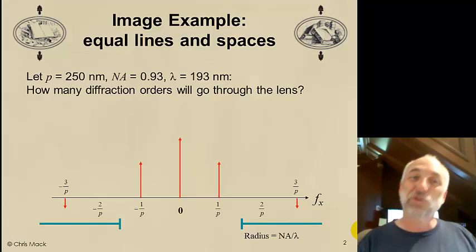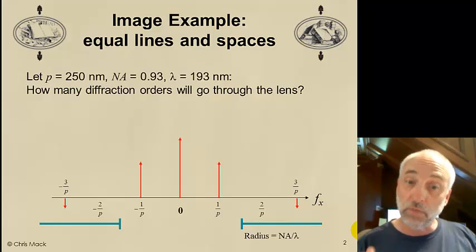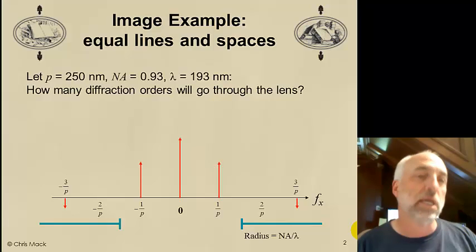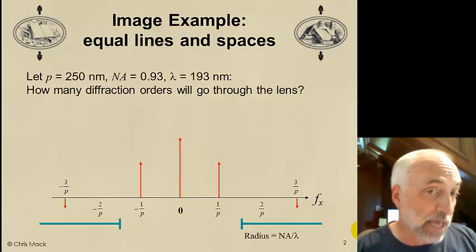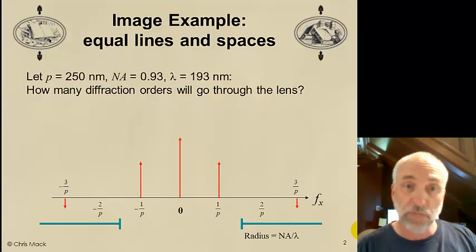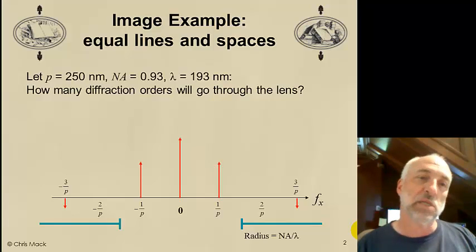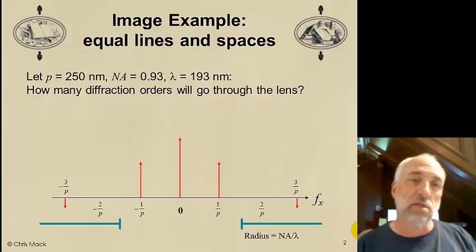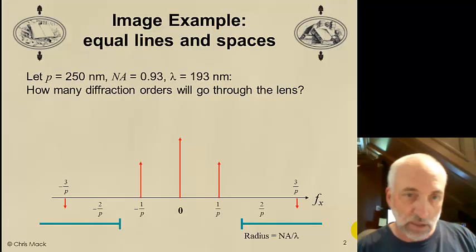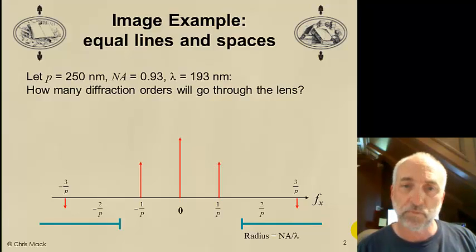Nonetheless, we'll talk about the pitch of an array of lines and spaces. Let's pick, as our example, 250 nanometers as the pitch. We'll assume we have equal lines and spaces, so that the space width is 125 and the line width is 125 nanometers. The result is a diffraction pattern, like this shown here, the zero order, the plus or minus first, plus or minus second, etc.